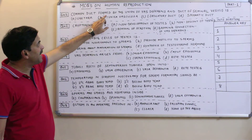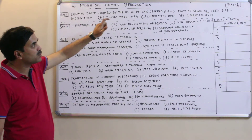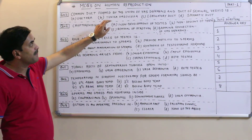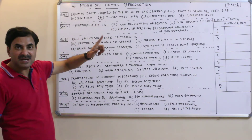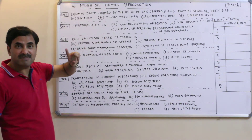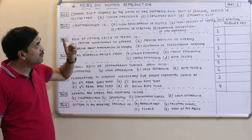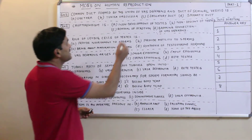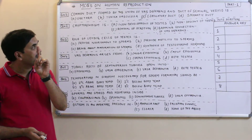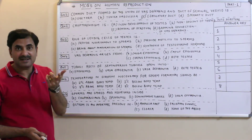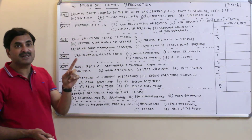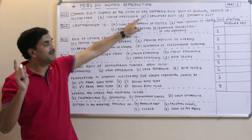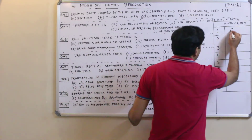Question one: What is the common duct formed by the union of vas deferens and the duct of the seminal vesicle? The vas deferens enters the abdominal cavity, makes a loop around the urinary bladder, and then combines with the duct of the seminal vesicle to form a new duct called the ejaculatory duct. The ejaculatory duct releases semen into the urethra. So the answer to question one is C — ejaculatory duct.